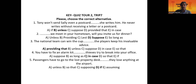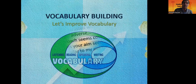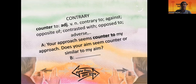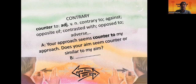It's time to enrich our vocabulary. 'Counter to' as an adjective or verb means contrary to, against, opposite of, contrasted with, or opposed to. For example: your approach seems counter to my approach — contrary to or against my approach. Does your aim seem counter to or similar to my aim? This time your aim doesn't seem counter to my aim, but similar to my aim.